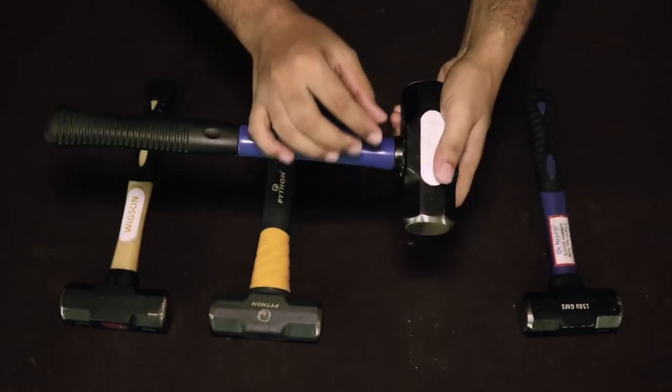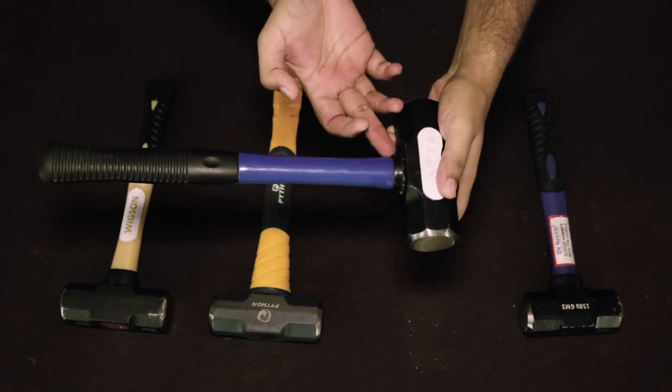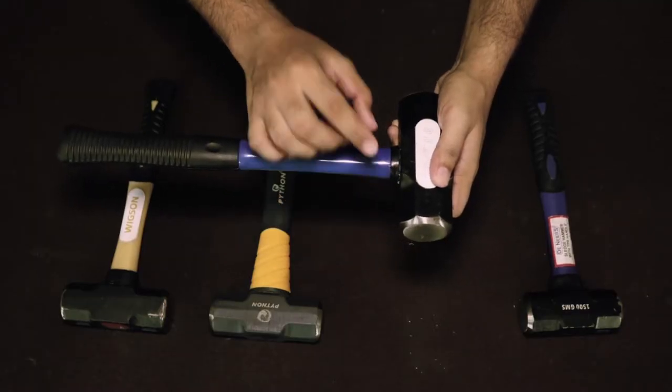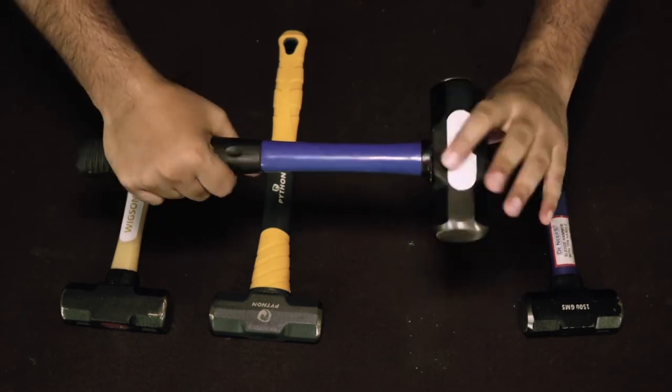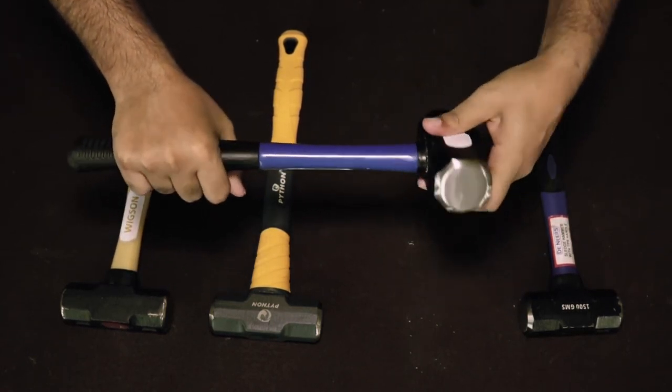Let's talk about the overstrike protector. You can see that there is no overstrike protector. If you have a sledgehammer miss-hit and you hit the handle with your target, then it will not only damage the handle, but you'll also feel shock and vibration.